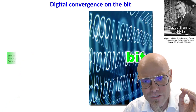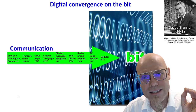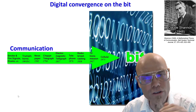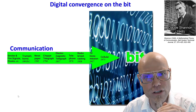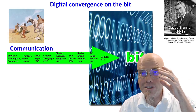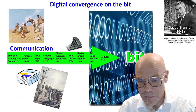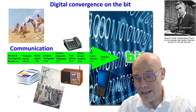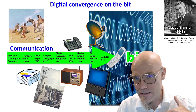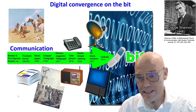The bit is so convincing and so useful as a unit of information that all previous information communication technology converged on it — we call it the digital convergence on the bit. Communication, starting with smoke signals, newspaper, the telegraph, telephony, radio, television — broadcasting was a lot of one-way communication — and then mobile telephony as well.